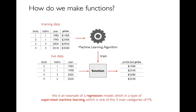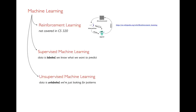The example I've given here is a regression model, and regression is more broadly a type of supervised machine learning, which is one of the main three categories. The three main areas of machine learning are reinforcement learning — where you make a series of decisions optimizing some reward, like a robot picking up coins — supervised machine learning, and unsupervised machine learning. We're not going to do reinforcement learning in this class. Some people also mention a fourth category called semi-supervised, but we won't cover that here.